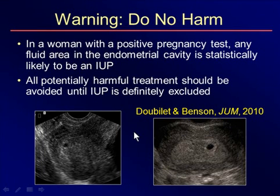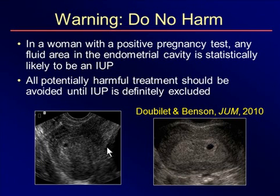More and more we're hearing case reports and anecdotal discussions of patients who were given methotrexate when an ectopic was suspected, and suddenly an intrauterine pregnancy shows up. Dubillet and Benson have written about this — a warning to do no harm to early pregnancies. One of their conclusions was that in a woman with a positive pregnancy test, any fluid area in the endometrial cavity is statistically likely to be an intrauterine pregnancy, whether normal or abnormal. We should give the pregnancy the benefit of the doubt, follow it up, and wait. All potentially harmful treatments such as methotrexate or D&E should be avoided until an IUP is definitely excluded.